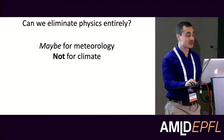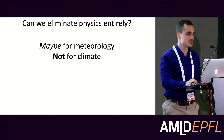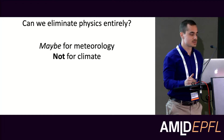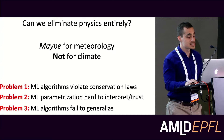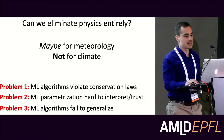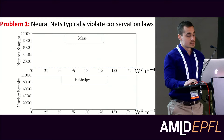What I'm hoping to convey is that eliminating physics could be appropriate for initial condition problems like numerical weather prediction, but it may not be a great idea for boundary condition problems like climate, where the earth will be subjected to conditions it has never experienced before. The answer is no, for at least three different reasons: physical consistency, interpretability, and generalization ability.